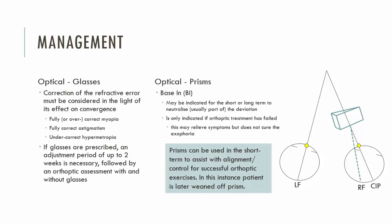If you want to consider prisms, it's going to be base-in prisms, because the patient is becoming exotropic — they have an exophoria and intermittent exotropia, and the base-in prism will bring the image to the fovea to assist the patient. Generally you don't want to prescribe prisms as a permanent solution. We prefer to give patients methods of learning how to control the deviation through glasses or through improving binocular functions through orthoptics. A prism may improve symptoms but doesn't give the patient the opportunity to learn to control the deviation on their own — unless you wean them off the prism gradually.